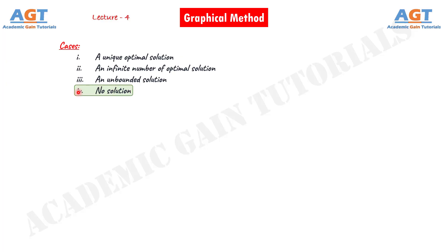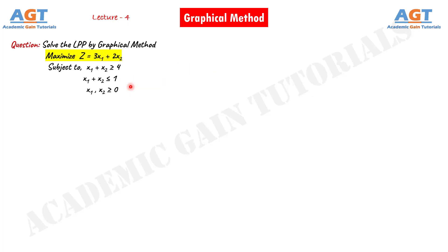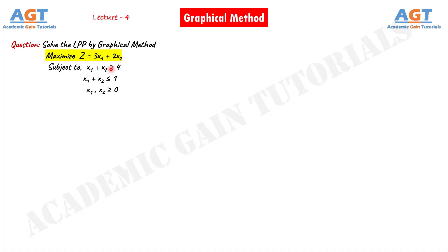In this lecture we will solve a linear programming problem by graphical method for no feasible region or no feasible solution. Here we have a linear programming problem. We are asked to solve this using the graphical method. It is given that: maximize z equals 3x1 plus 2x2, subject to two given inequality equations where there are two variables in each of them, and x1 and x2 are greater than or equal to zero.